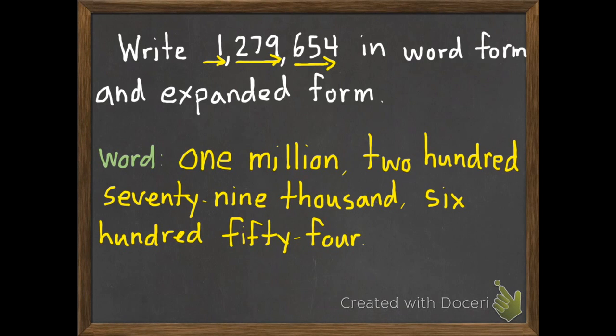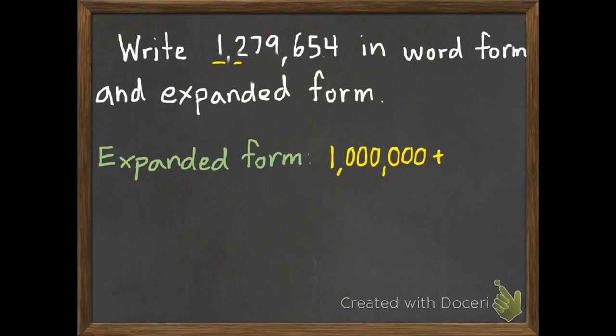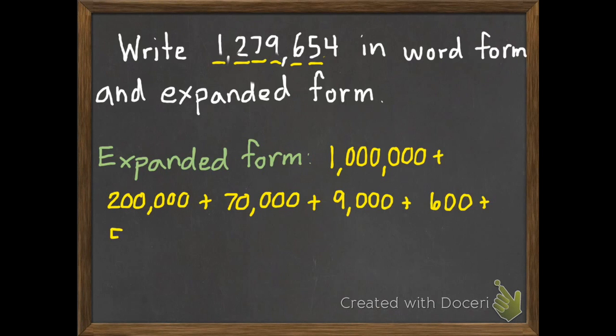Now, let's do the expanded form. Remember, I'm going to take each digit, and I'm going to write its value, and then add them together. That 1 is really a value of 1,000,000, plus 200,000, plus 70,000, plus 9,000, plus 600, plus 50, plus 4. That is the expanded form.